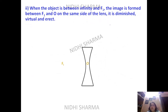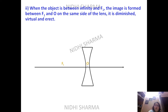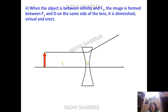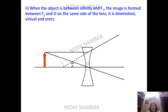When the object is between infinity and F1, the image is formed on the same side as the object. The parallel ray diverges and comes to the virtual focus; a ray through the optical center passes straight. The image formed is diminished, virtual, and erect.